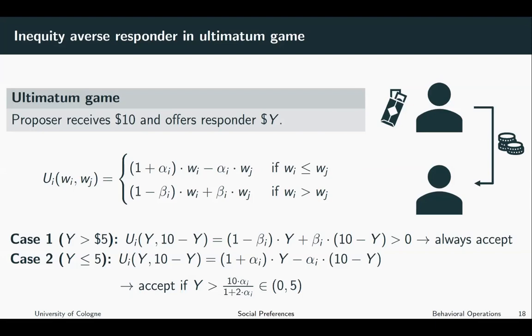Okay, so what you can see here is that the more the responder is concerned about disadvantageous inequality or envy, the higher is the offer the proposer has to make for being accepted.